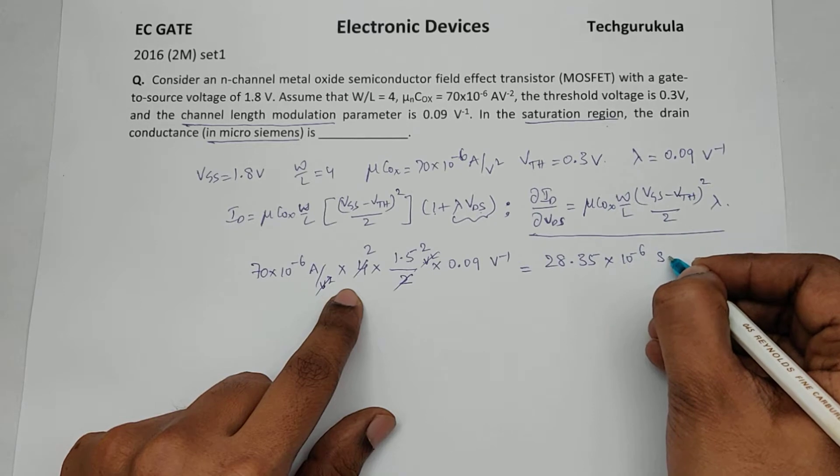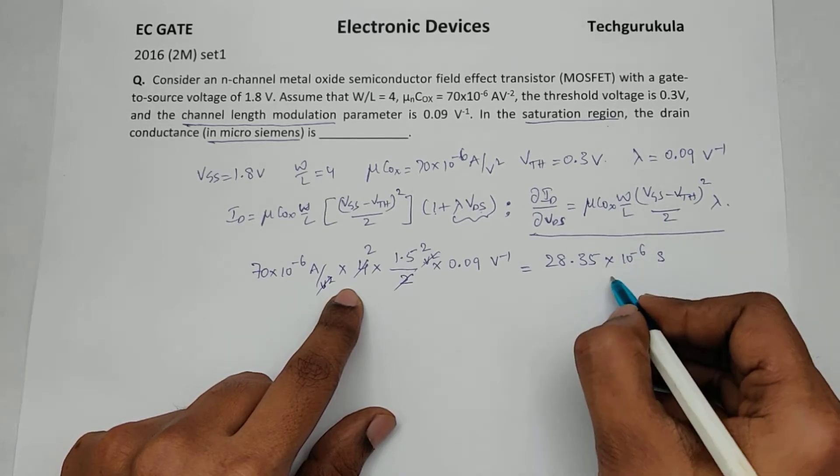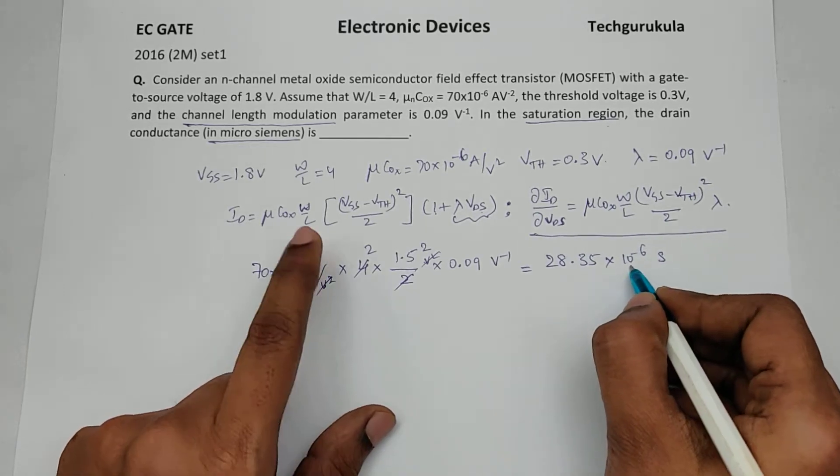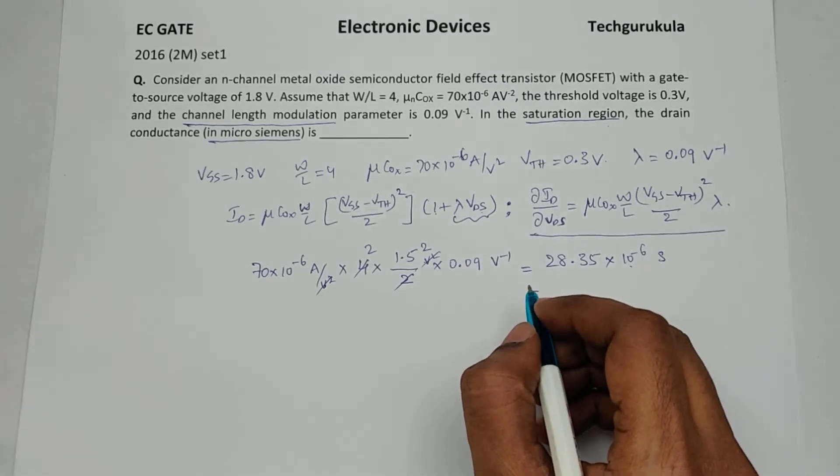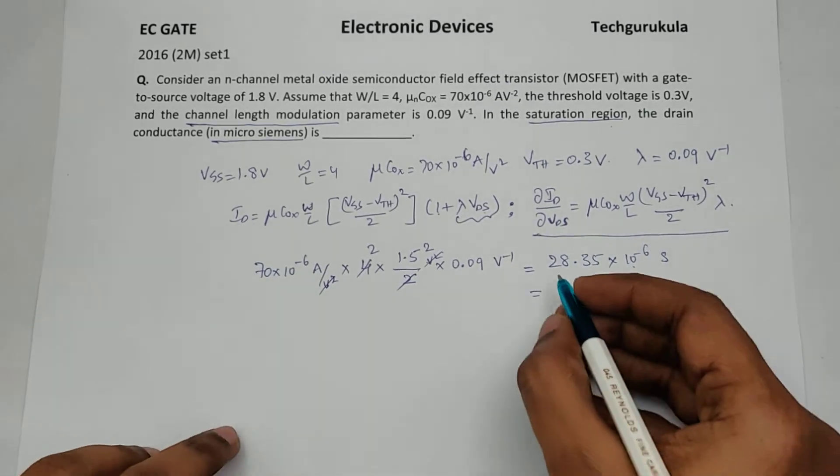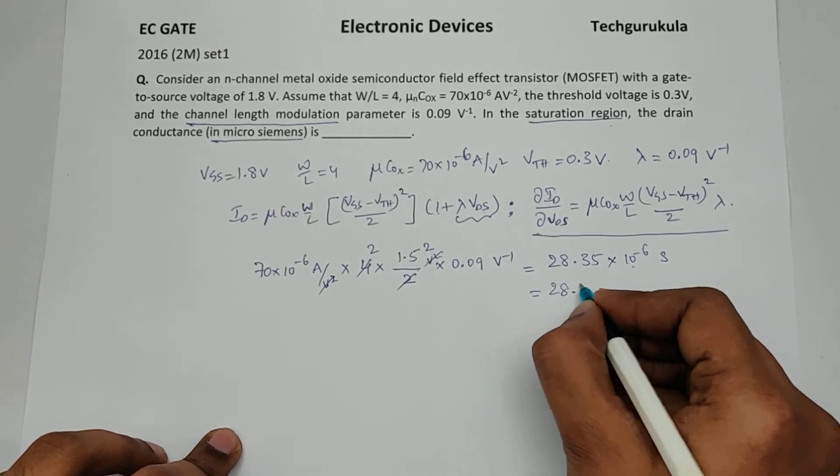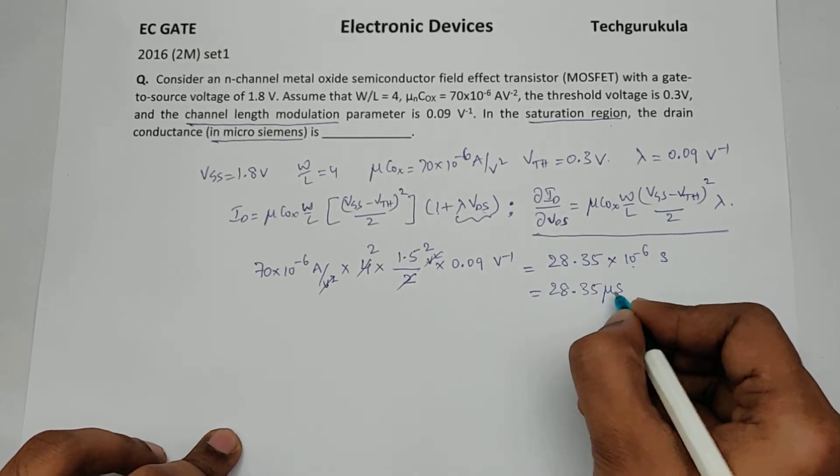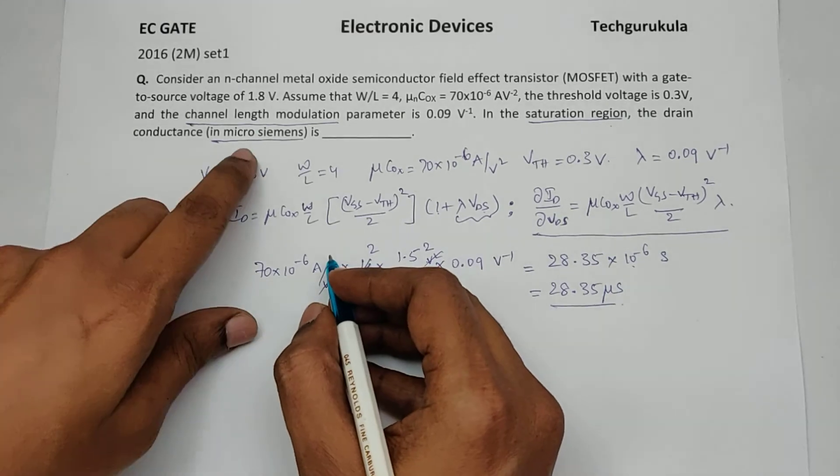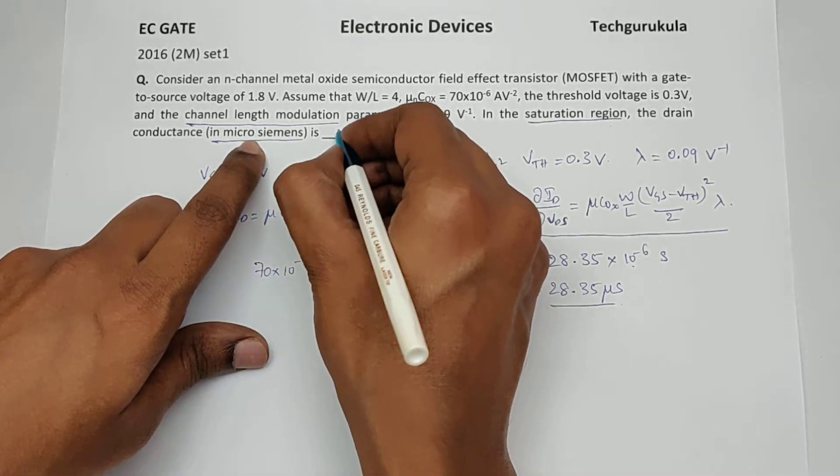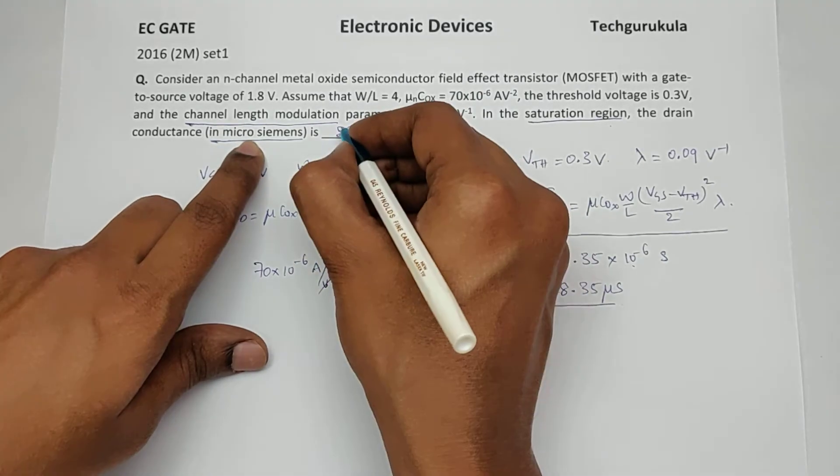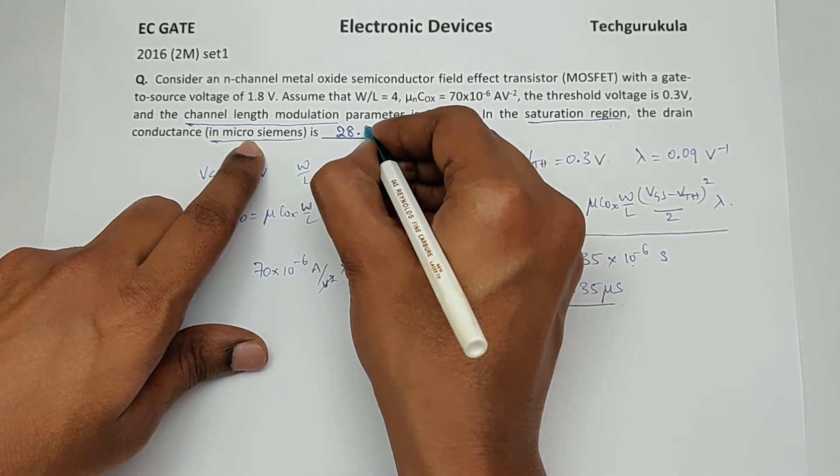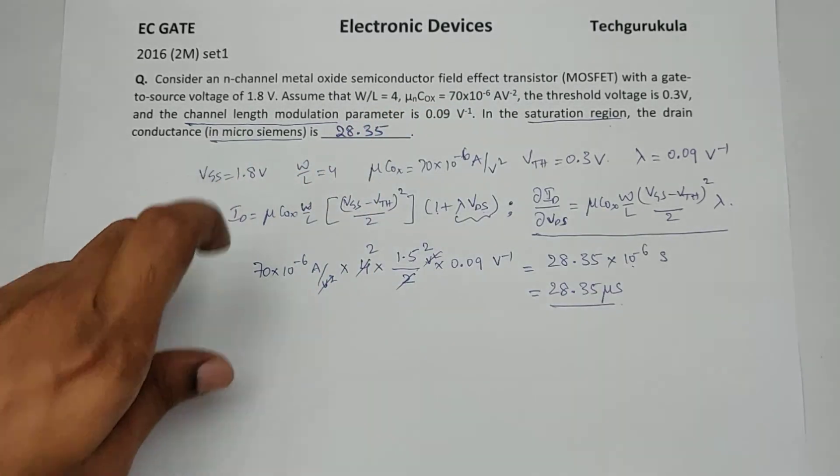This will be Siemens. So this is in micro, so the value is 28.35 micro Siemens. It is asked in micro Siemens, so the answer is 28.35.